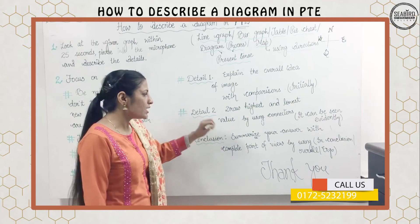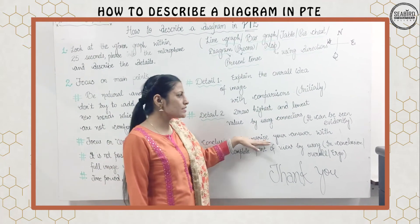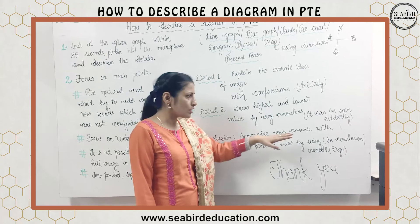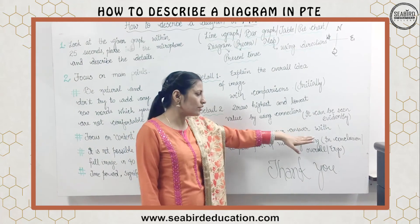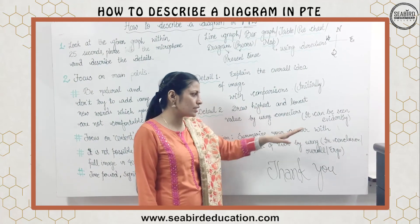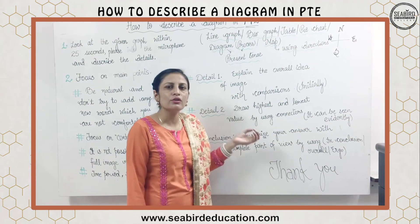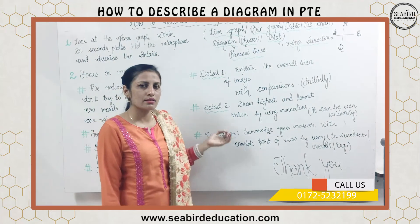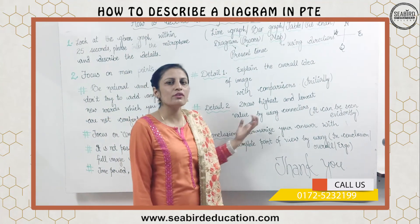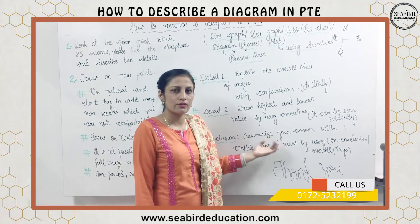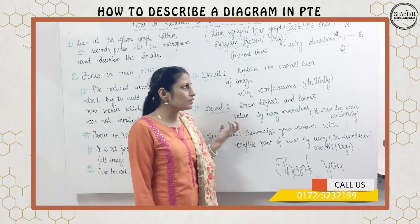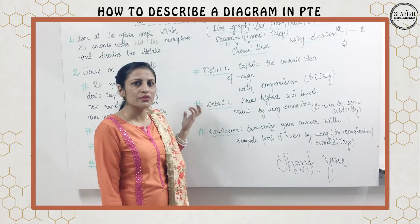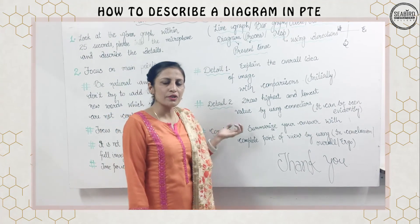The conclusion is to summarize your answer with a complete point of view by adding connectors such as: in conclusion, overall, or ergo — it is analyzed that what the value is. That's all. Hope it will help you in explaining your diagram. Thank you so much.